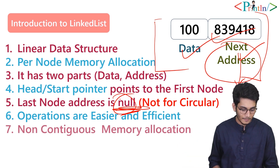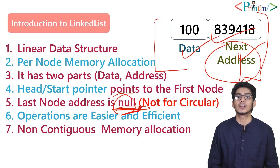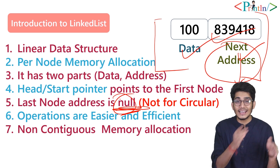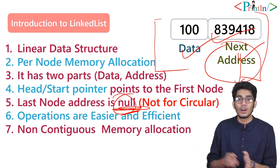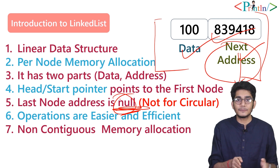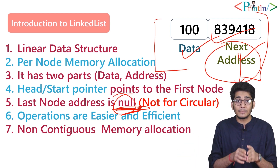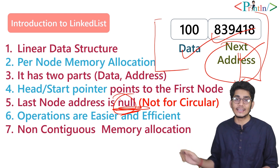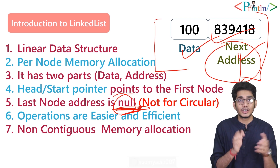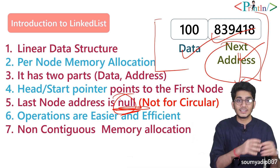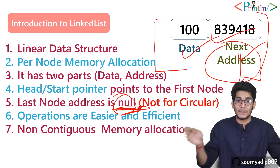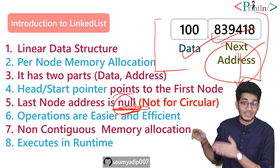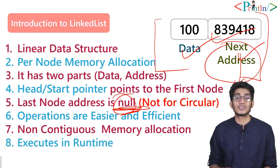Linked list uses non-contiguous memory allocation. In an array, if the first address is 1000, the next address must be 1024, then 1028 — addresses are sequential. But in linked list the memory is non-contiguous. You can merge two linked lists, but you cannot merge two arrays because arrays have static memory that you cannot expand.